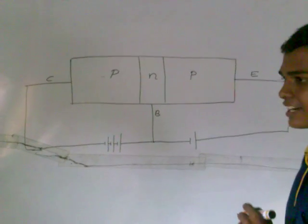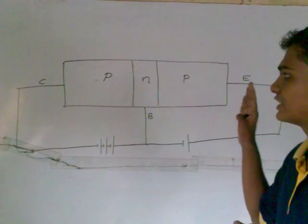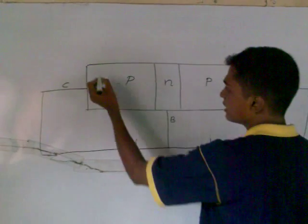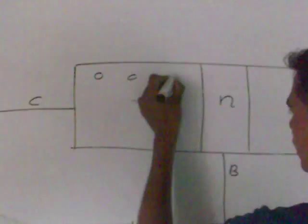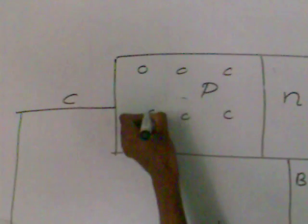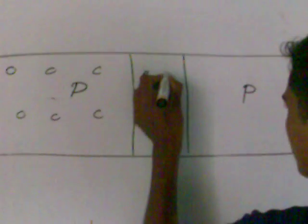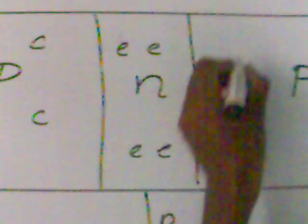We should look at the transistor and PNP transistor. We are aware that the P region is a small part of the transistor. The N region is a small part of the transistor. The P region is a small part of the transistor.